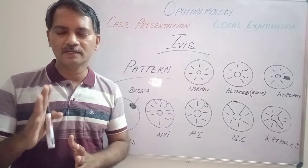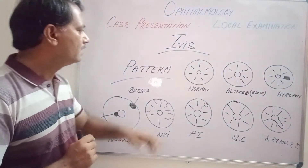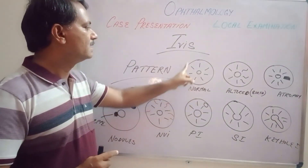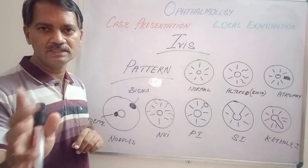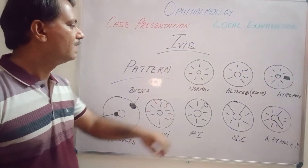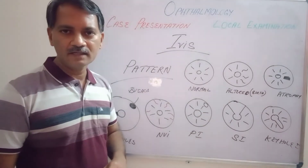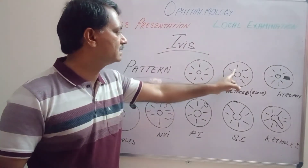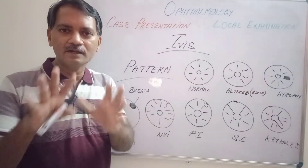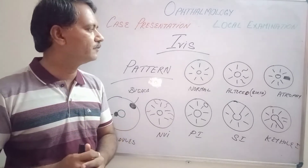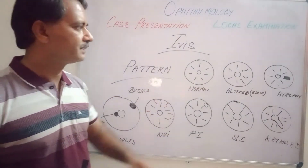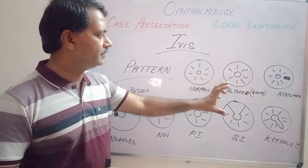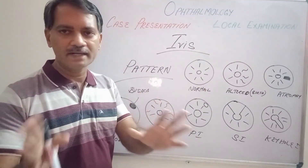Coming to the discussion on the pattern of the iris: each iris will have a pattern, and it is said to be normal if the pattern is the same all around 360 degrees. A congenital defect may lead to an abnormal pattern within the same iris — for example, straight lines in one area and curved lines in another. Atrophy of the iris can also alter the pattern of the iris.